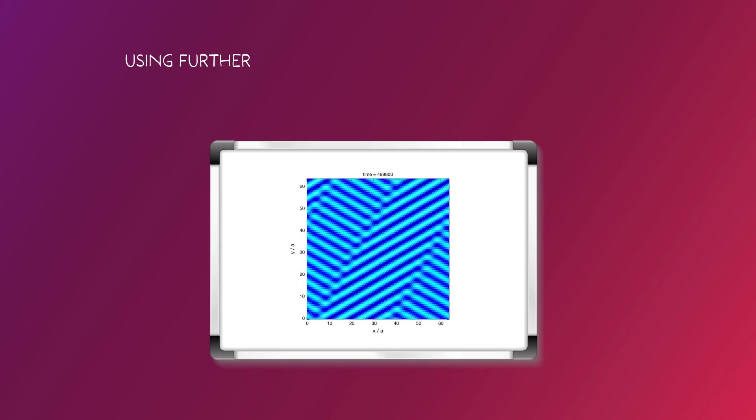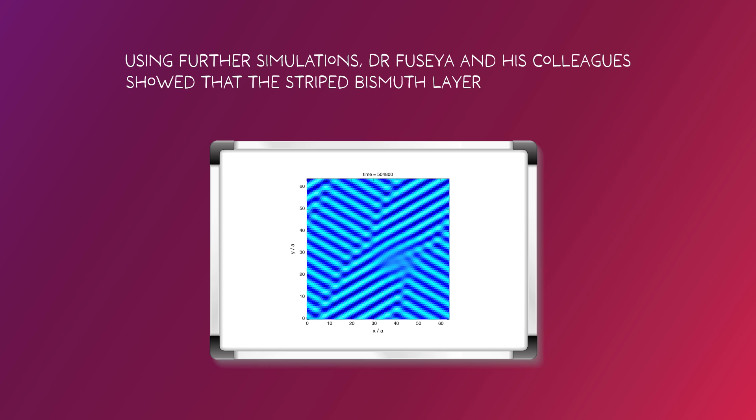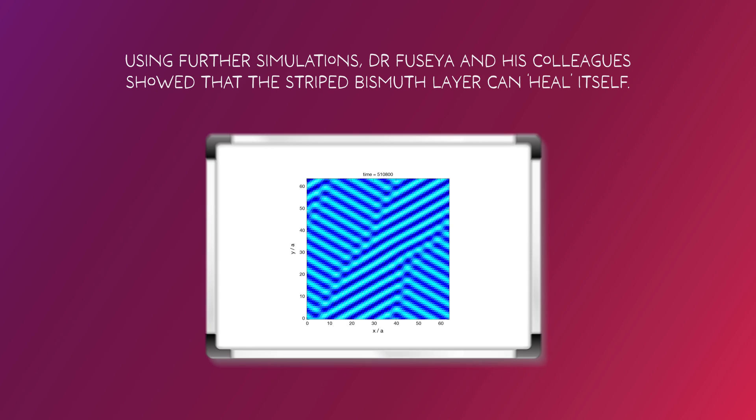Using further simulations, Dr. Faseya and his colleagues showed that the striped bismuth layer can heal itself. When the surface of the layer is damaged, it reforms, restoring the original pattern.